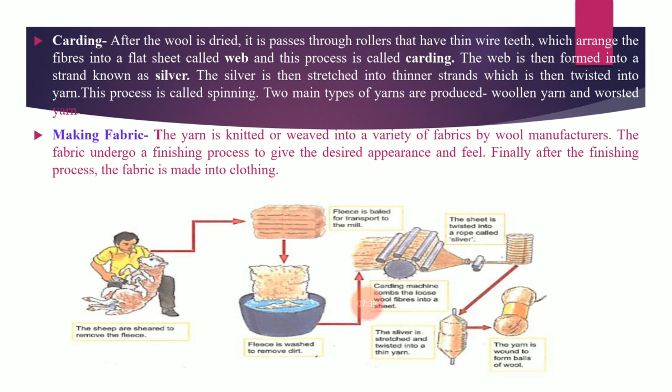Woolen yarns are bulky, uneven, with a soft and fuzzy appearance, while worsted yarns are fine and smooth with a crisp appearance. The yarn is then knitted or weaved into a variety of fabrics by wool manufacturers. Knitting uses one yarn to make a fabric, while weaving uses two yarns. After weaving or knitting, a finishing process gives the desired appearance and feel to the fabric, which is then made into clothing.